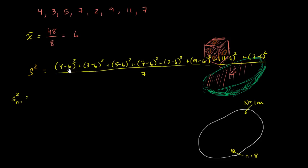It's going to be equal to, let's see, 4 minus 6 is negative 2, that squared is positive 4, so I did that one. 3 minus 6 is negative 3, that squared is going to be 9. 5 minus 6 squared is 1 squared, which is 1. 7 minus 6 is once again 1 squared, which is 1. 2 minus 6, negative 4 squared, negative 4 squared is 16.